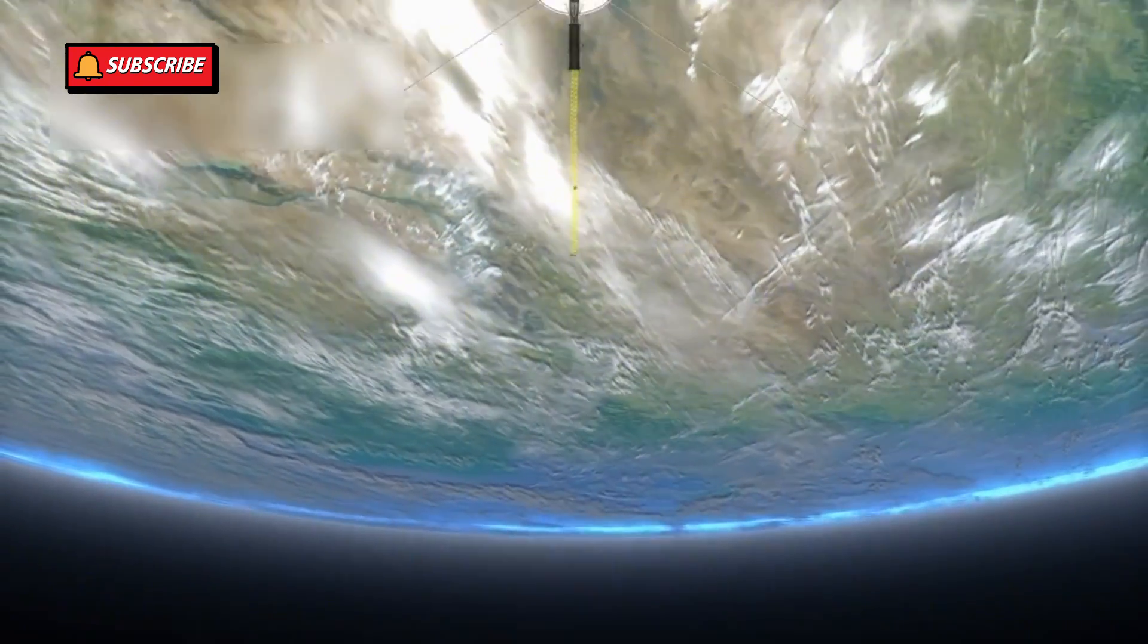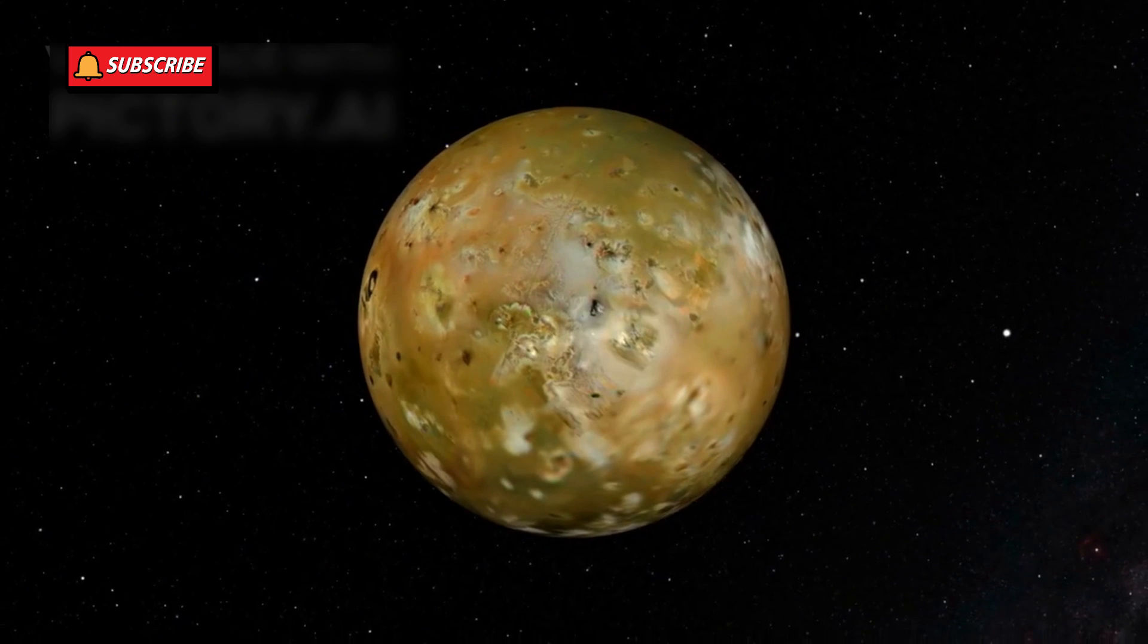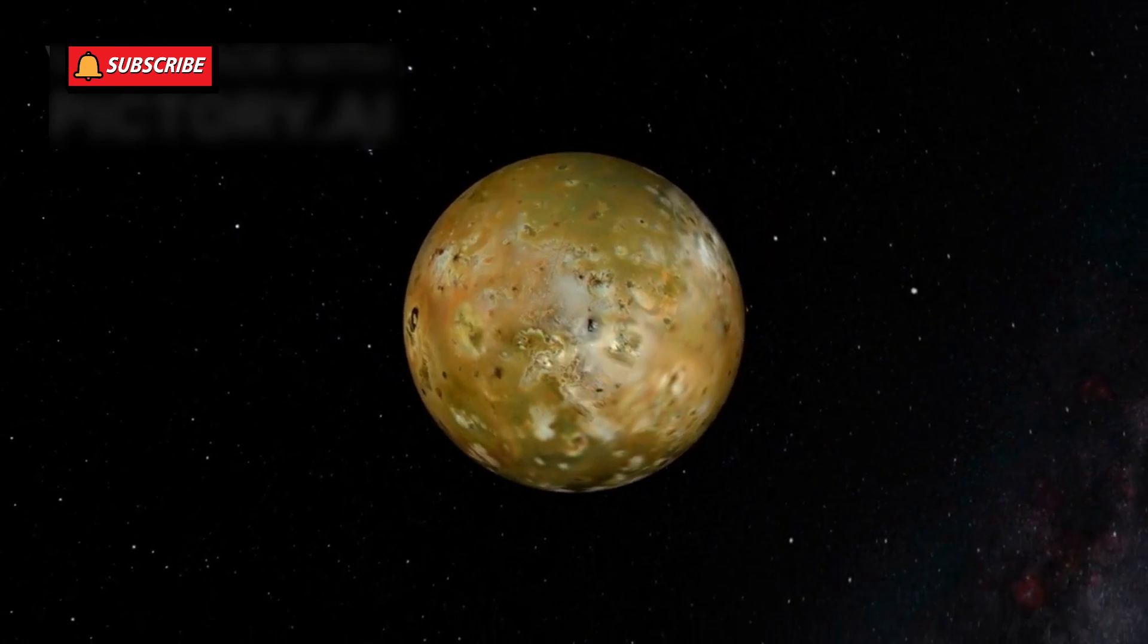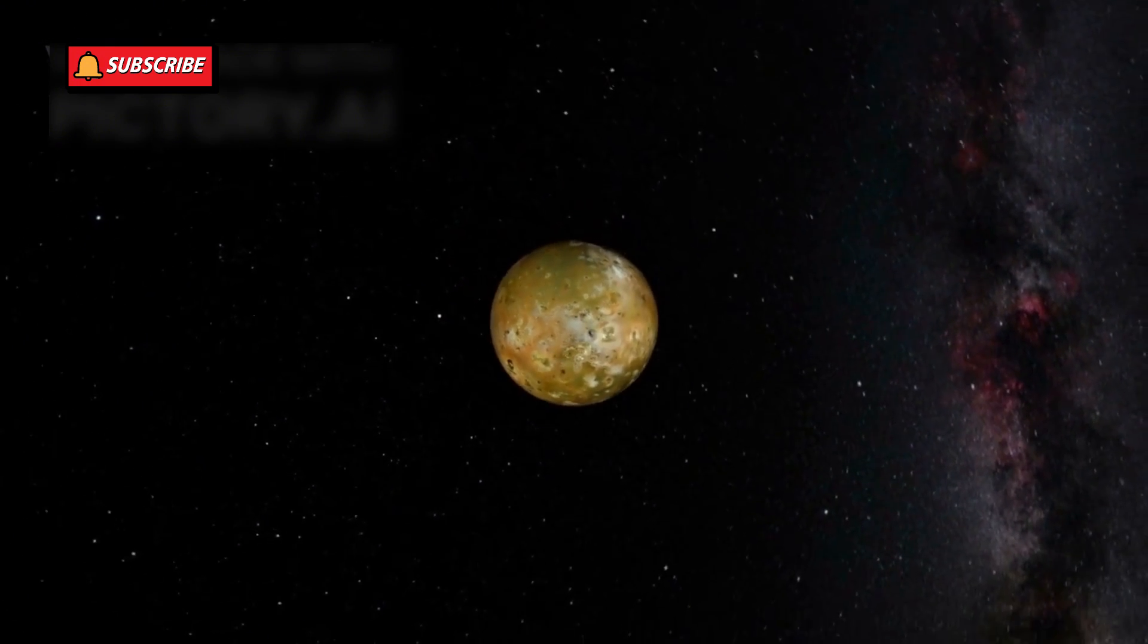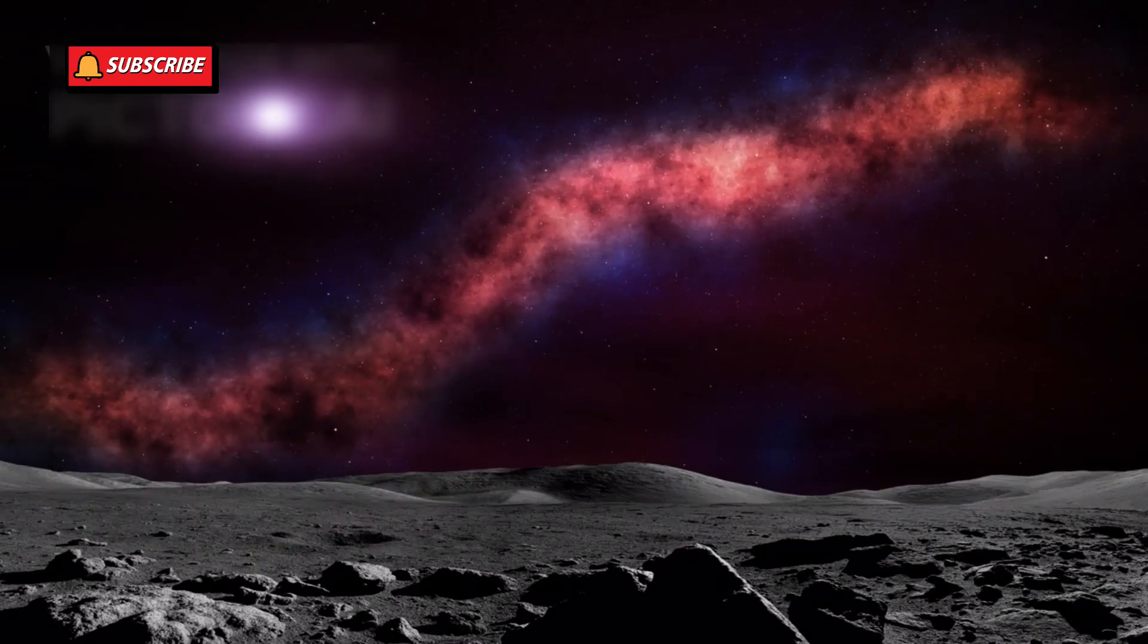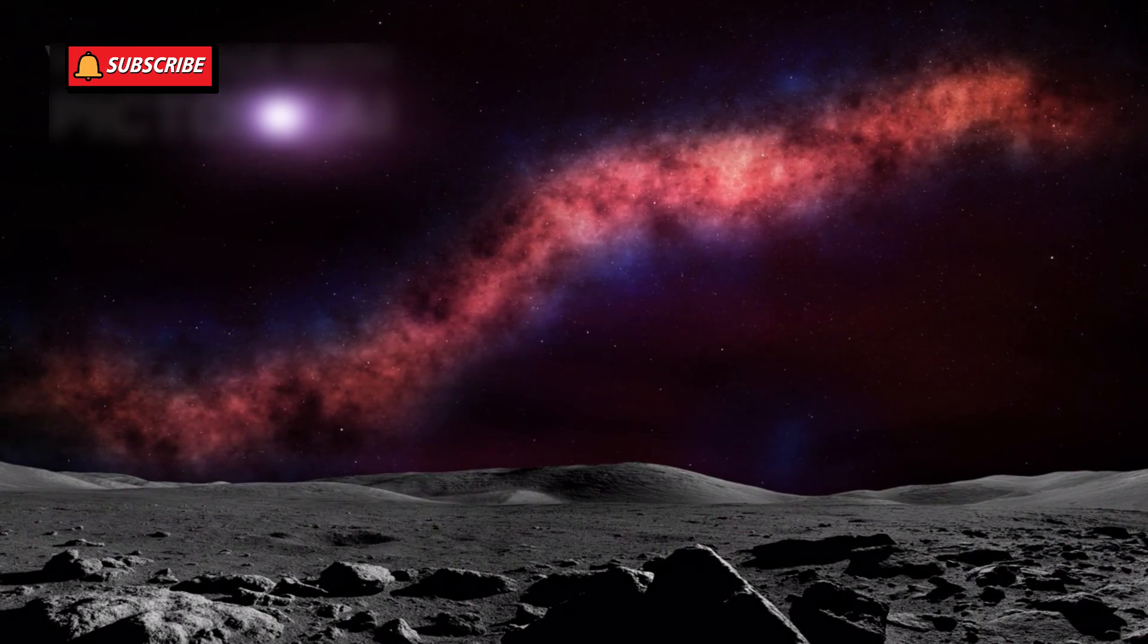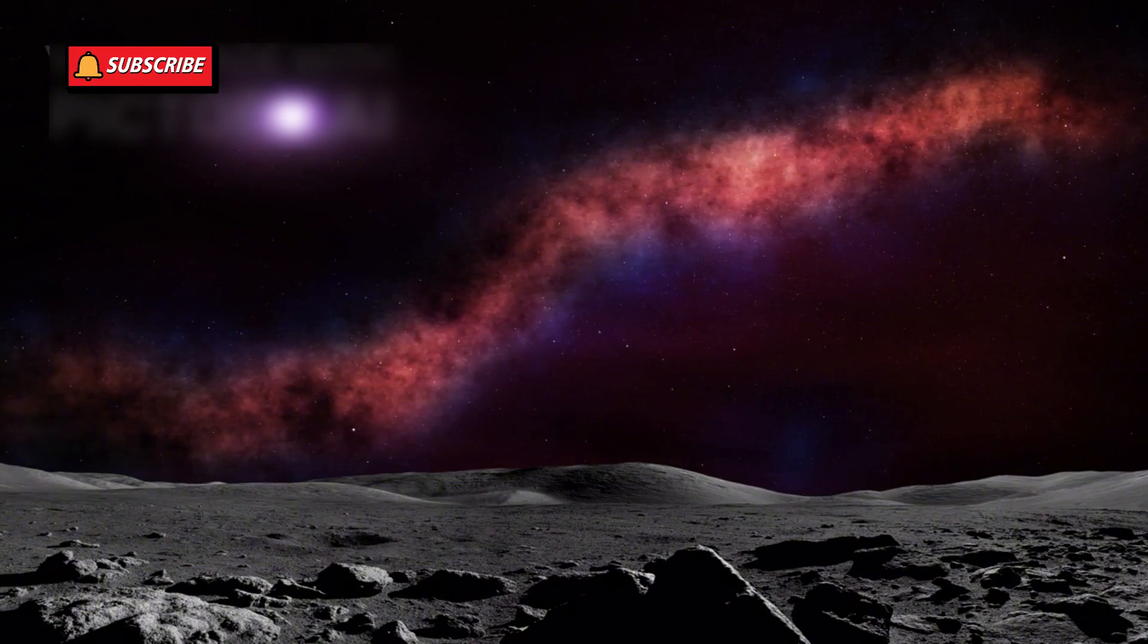In its early years, Voyager 1 made groundbreaking discoveries. It revealed that the moons of Jupiter and Saturn, once thought to be barren, were actually full of activity and surprising features. For instance, Europa, one of Jupiter's moons, was found to have a surface filled with cracks, hinting at potential liquid water beneath.